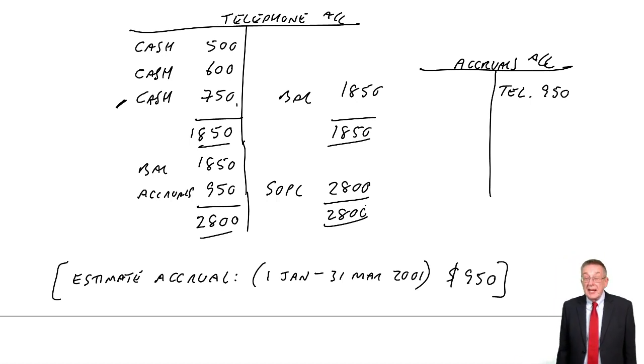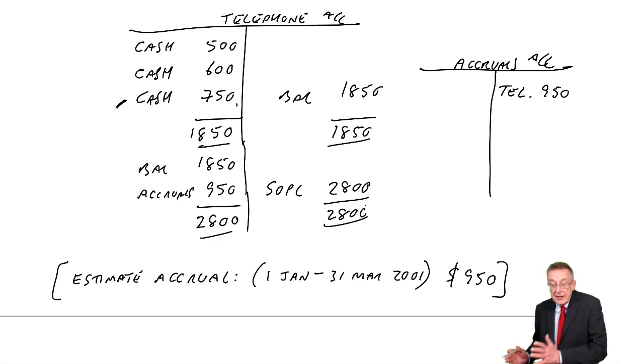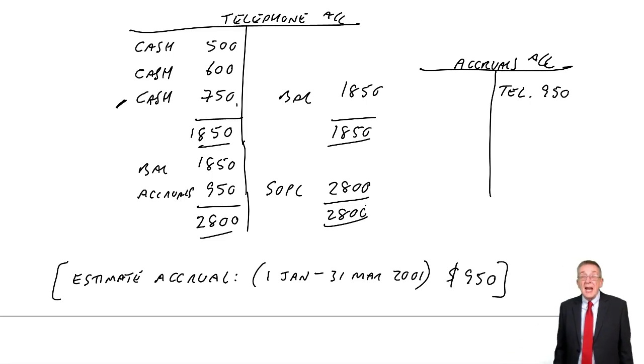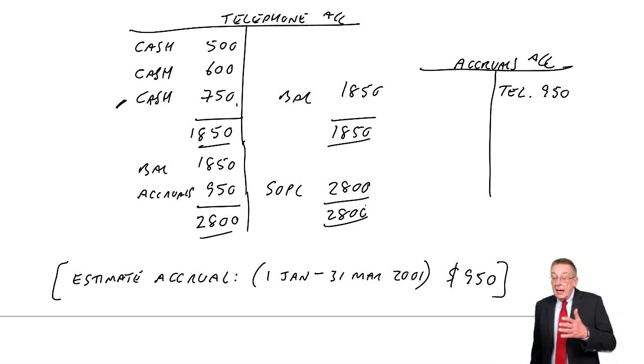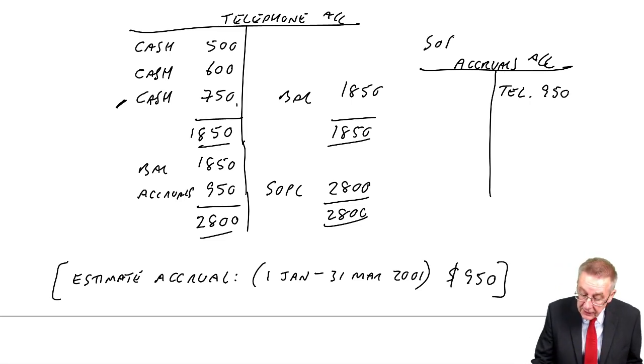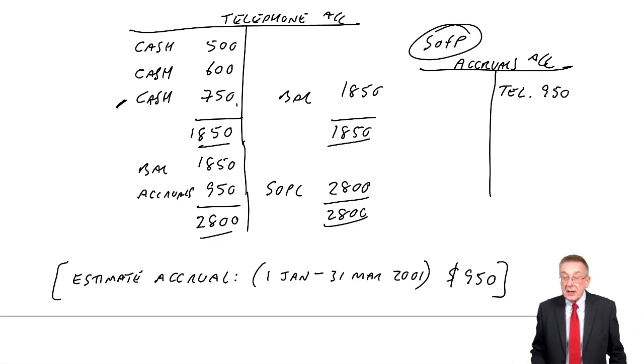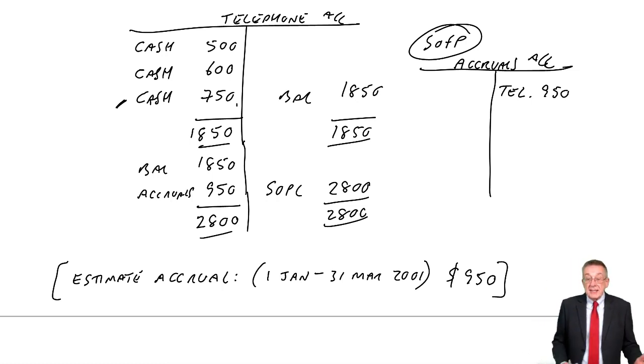What about the accruals account? Well, that 950, a credit balance, a credit effectively, it's like a payable. It's a liability. That will appear, and before, it will appear on the statement of financial position as a current liability. And as with all those items, assets, liabilities, we'll leave the balance there.